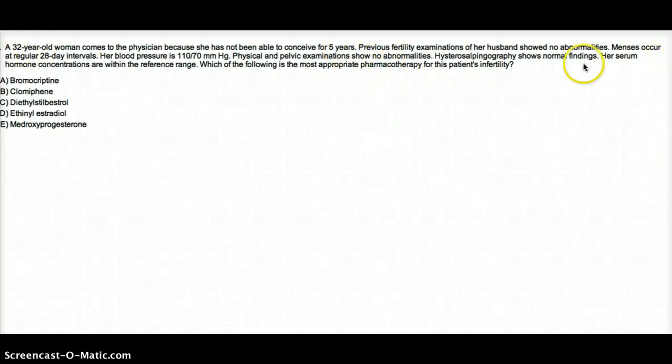It says that menses occur at regular 28-day intervals, so she's having menses. So her HPO axis, or hypothalamus-pituitary axis, is fine.